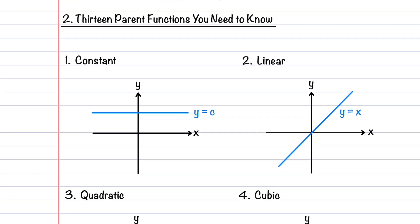Let's now dive into the 13 parent functions that you need to know. You should become familiar with their graphs, their equations, and key properties. The first function is the constant function, described by the equation y = c. It is defined for all values of x, is a horizontal line with a slope of 0, and is the same for all values of x.